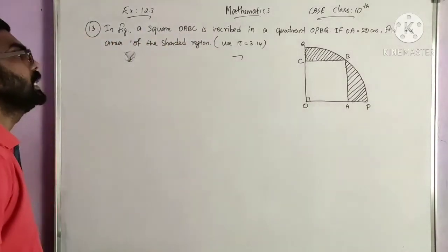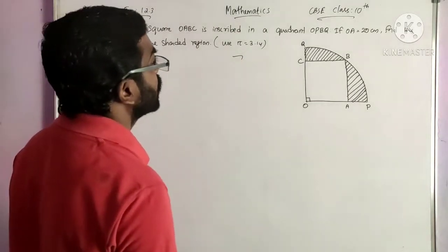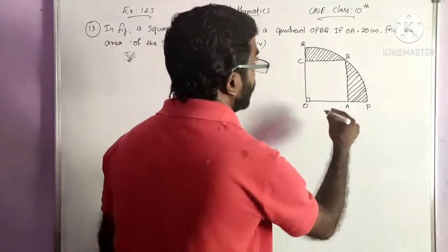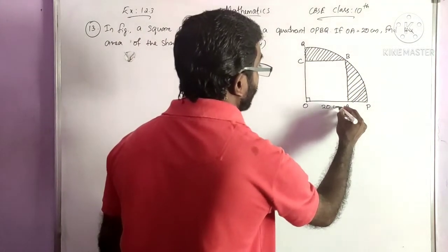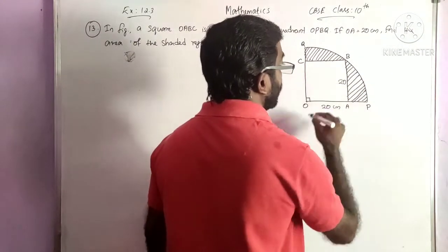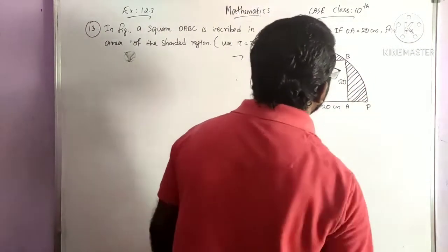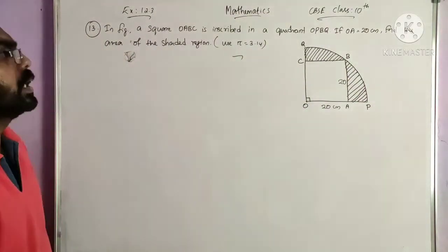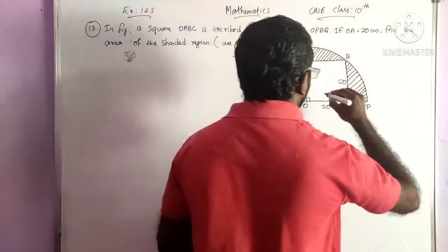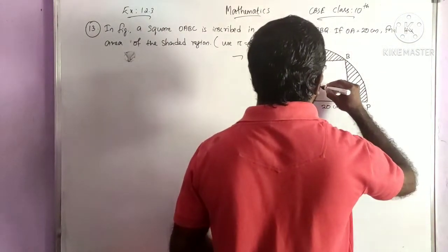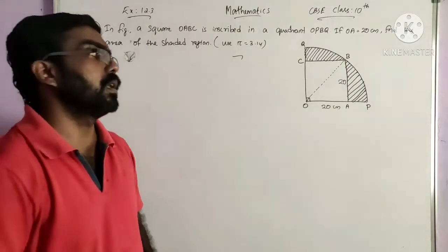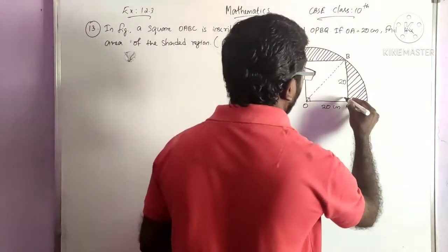The next question: in the figure, a square OABC is inscribed in a quadrant OPBQ. OA equals 20 cm, and since it is a square, AB also equals 20 cm. Find the area of the shaded region. First, find the radius of the circle by joining OB. In a square all angles are 90 degrees, so angle A is also 90 degrees.